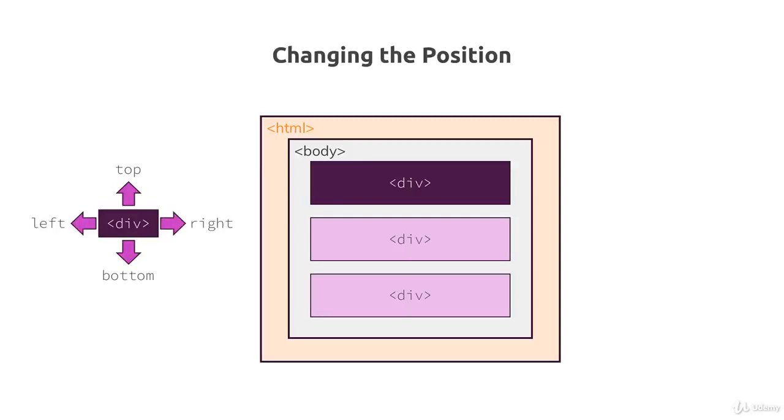We could also use these in combination like top and left, bottom and right, or maybe all of these depending on what you want to achieve. The important thing is that with these properties - top, right, bottom, left - you change the position of the elements in your document flow. These properties refer to the initial position in the document flow.